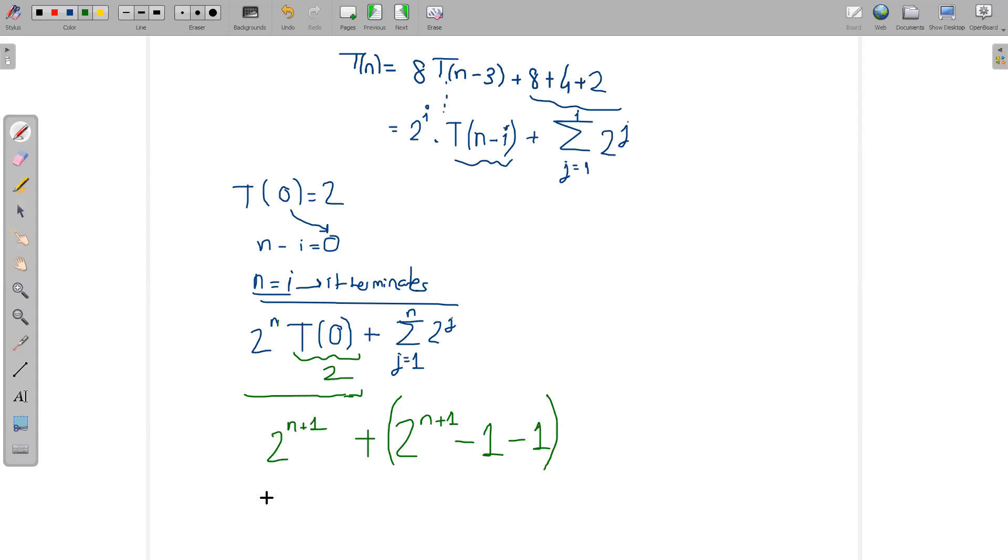Now it equals 2·(2^(n+1)) - 2, and it gives us 2^(n+2) - 2, which is exponential. Is there a question for that one? I'm just omitting these constants.